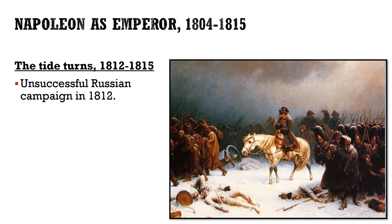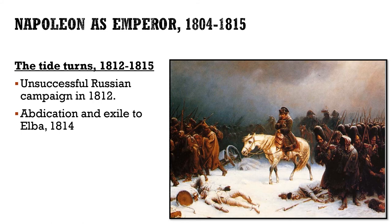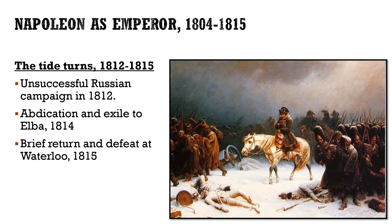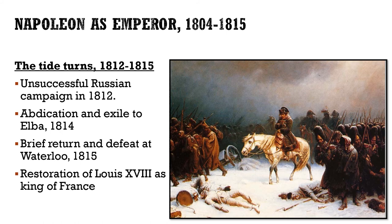Napoleon was finally defeated by a combined European force. He was forced to abdicate from his throne and was exiled to the small island of Elba in 1814. But that wasn't the end of his story — Napoleon managed to escape from Elba, came ashore, rallied some of his old troops, and briefly returned with an army. But all of Europe had pretty much had enough of him. He was finally defeated for the last time at Waterloo in Belgium in 1815, and then exiled again much further away. France returned to having a monarchy.